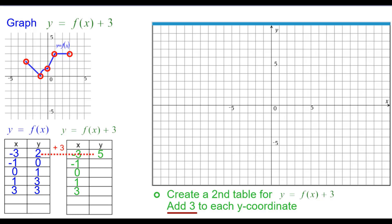And so adding 2 plus 3, we get 5, so negative 3 comma 5. 0 plus 3 is 3, negative 1 comma 3. 1 plus 3 is 4, 0 comma 4.